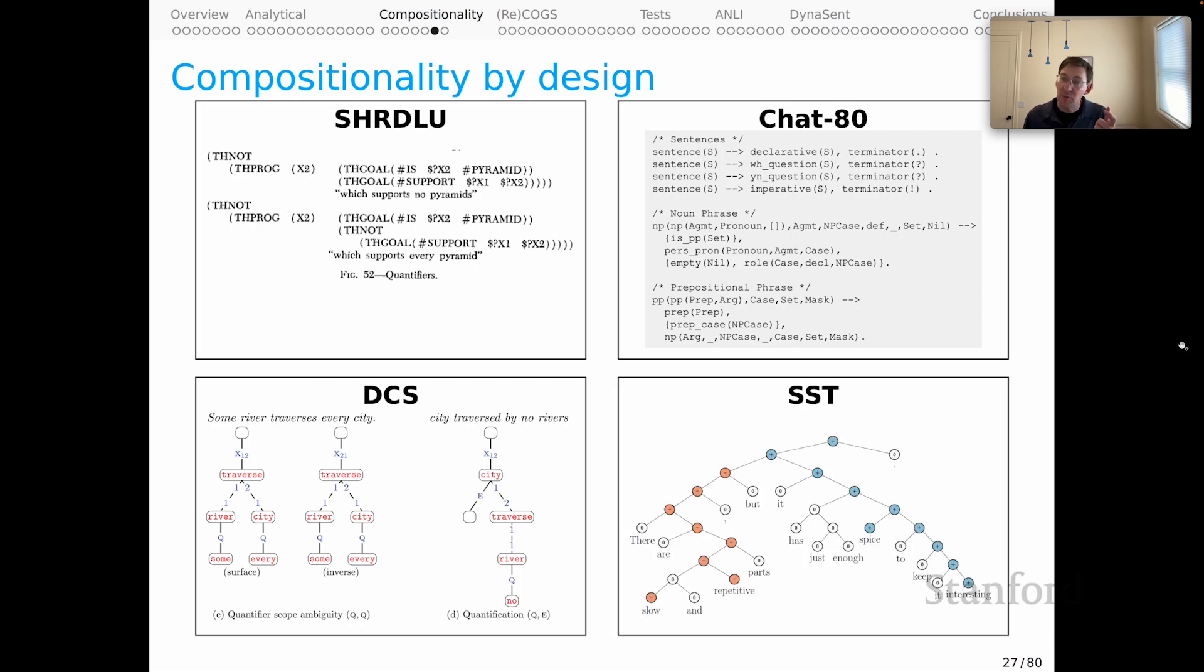And even in the more modern deep learning era, we again saw systems that were arguably compositional. This is from the paper that launched the Stanford Sentiment Tree Bank. It's a recursive tree-structured neural network. And it abides by the compositionality principle in the sense that all the nodes depicted in these structures denote vectors. And there was a complicated deep learning function that combined those vectors to derive the meaning for their parent nodes. And it did that recursively until we got a meaning for the entire sentence. So it's not symbolic in the way of these older systems and in the way of much work in linguistic semantics, but it is arguably a compositional system, an intriguing property of those deep learning artifacts, in fact.